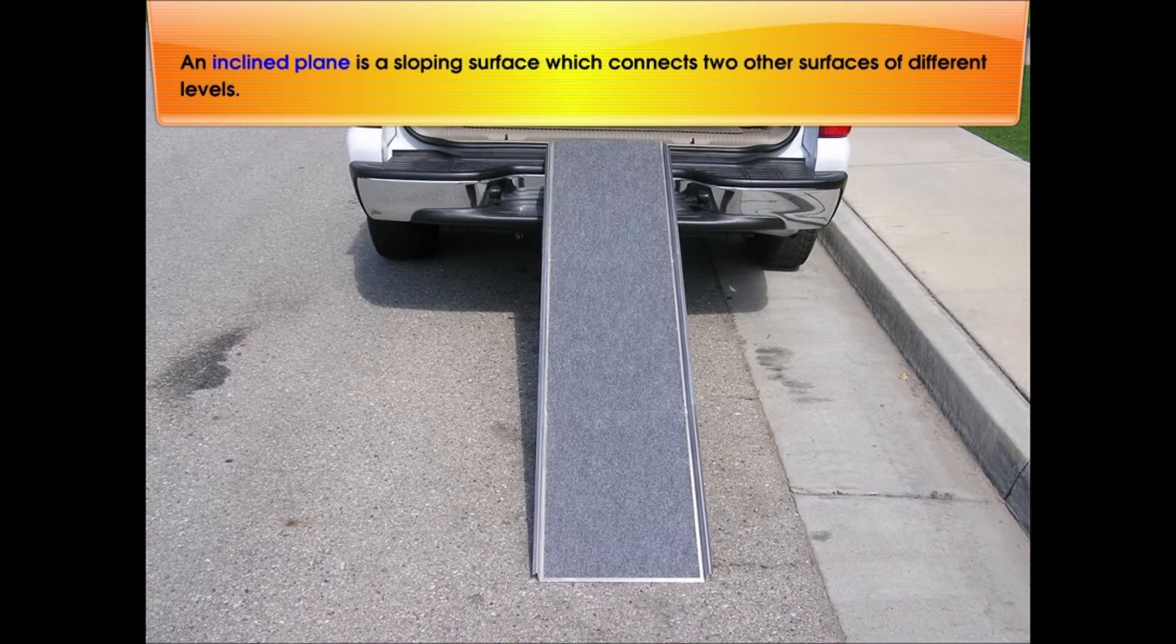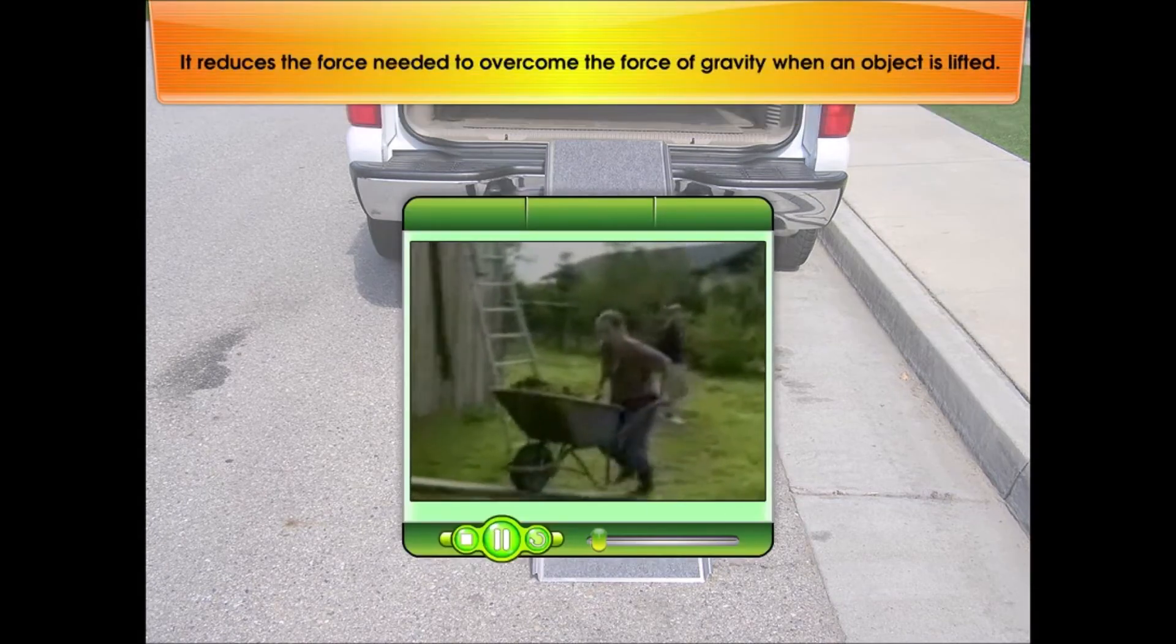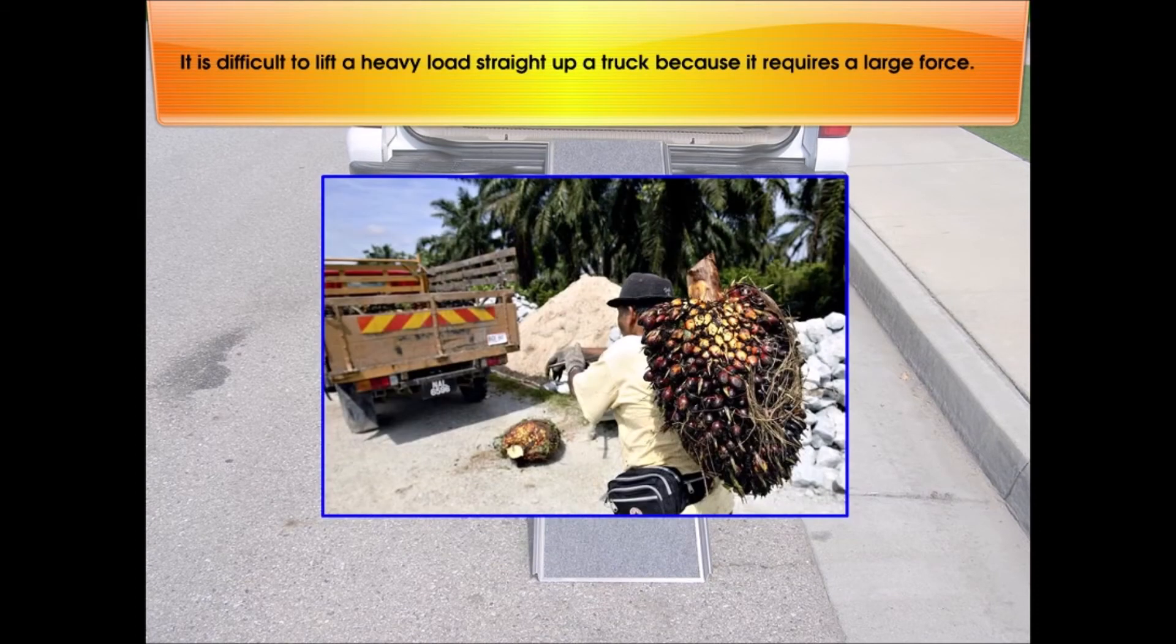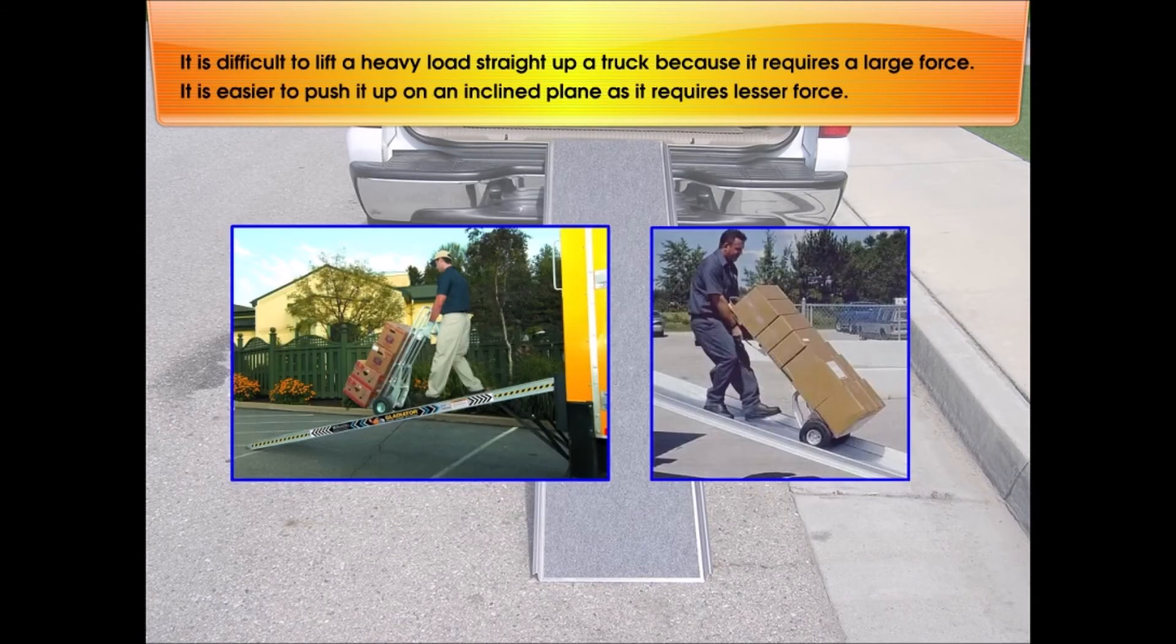An inclined plane is a sloping surface which connects two other surfaces of different levels. It reduces the force needed to overcome the force of gravity when an object is lifted. It is difficult to lift a heavy load straight up a truck because it requires a large force. It is easier to push it up on an inclined plane as it requires less force.